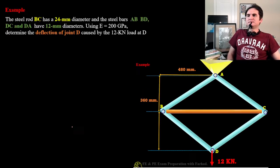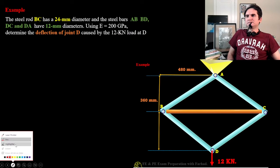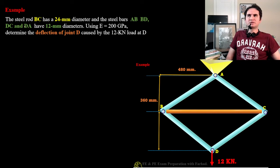Let's attempt this problem. We have a configuration with a steel rod BC at the center, which has a 24 millimeter diameter and four steel rods AB, BD, DC and AC.